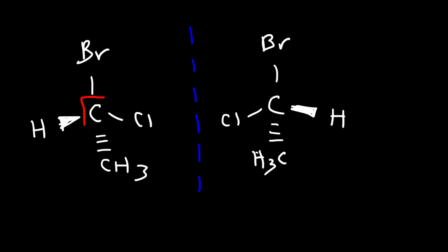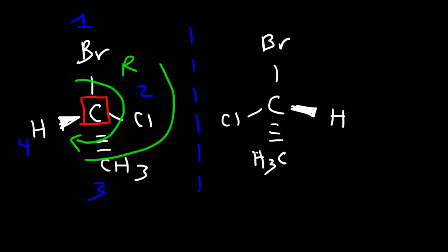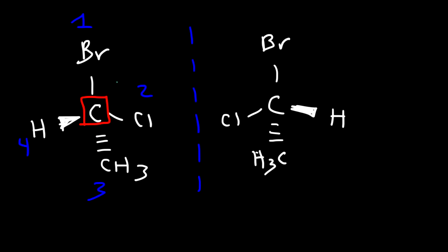Now let's assign the configuration to each chiral center. For the left chiral center, this is group number 1, 2, 3, and 4. The H is on the wedge, so because it's coming out of the page, we need to reverse it. Counting 1 to 2 to 3, it appears to be R, but because H is in the front, not in the back, we reverse it — giving us the S isomer.